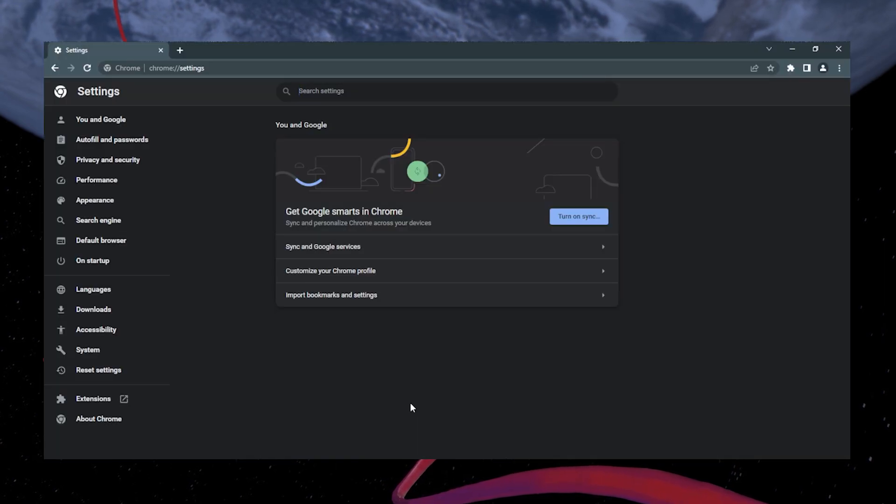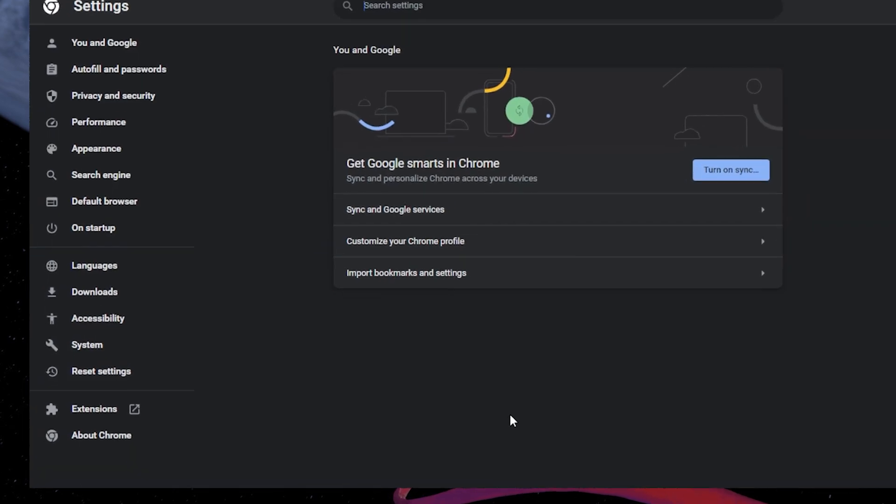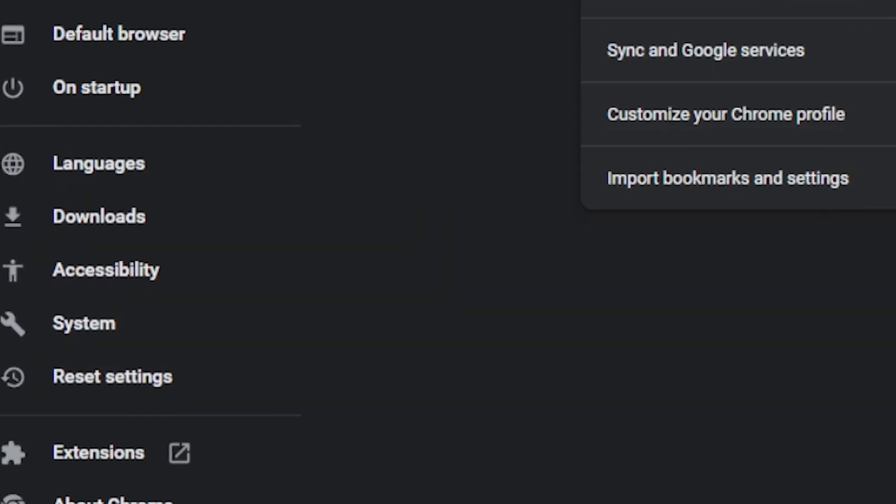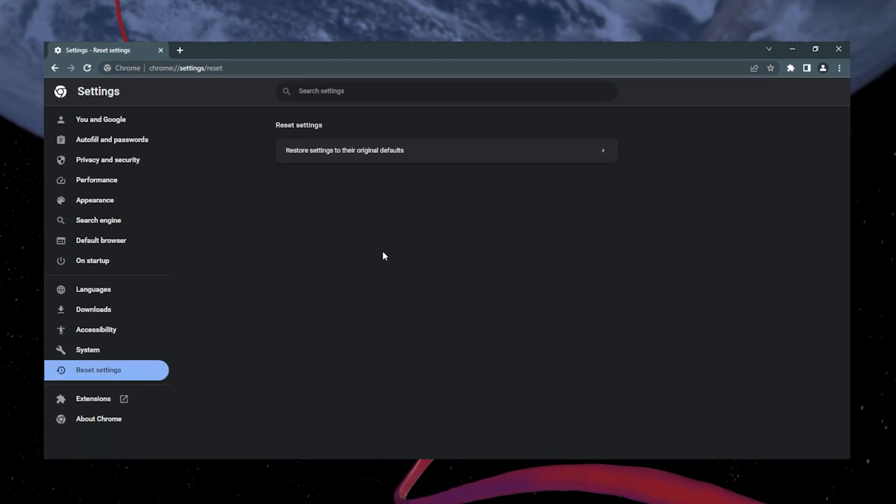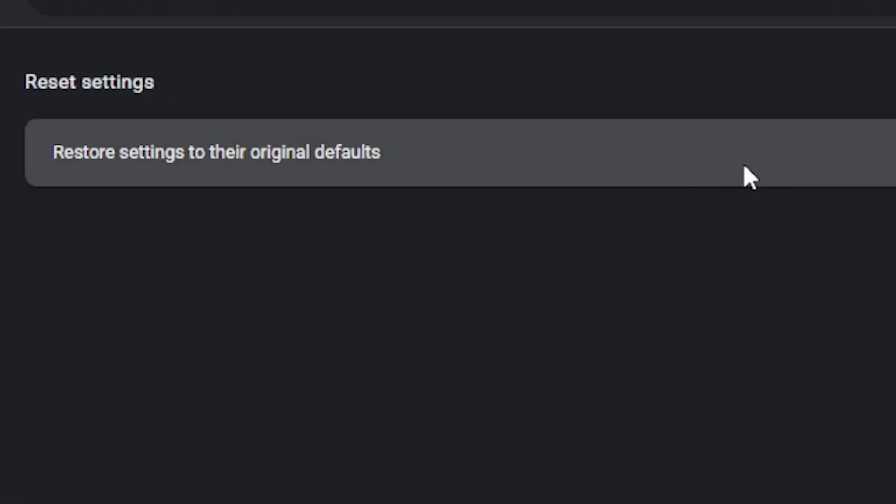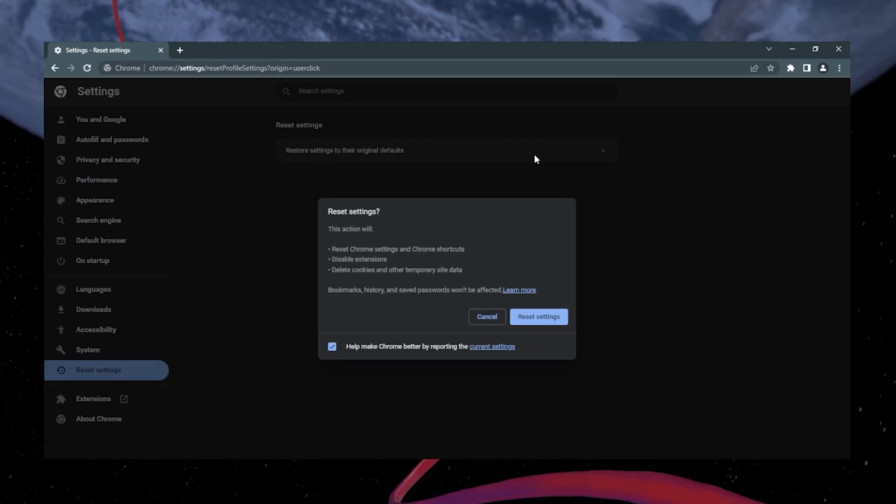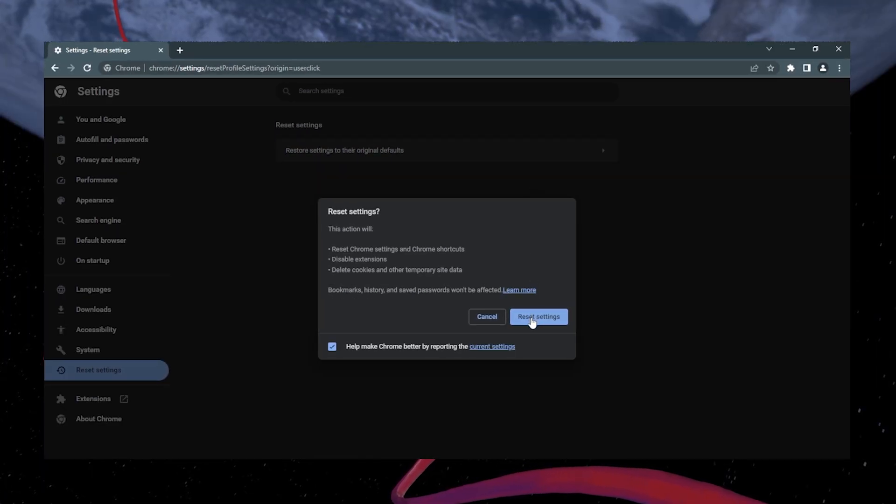Head to your browser settings. Again, in this case Google Chrome. On the left side menu bar, select Reset Settings. It will navigate you to this page. Here, click on Restore Settings to the original defaults. Once selected, a dialog box will open up. Select Reset Settings and close this page.